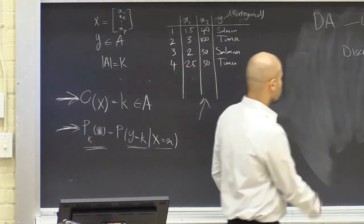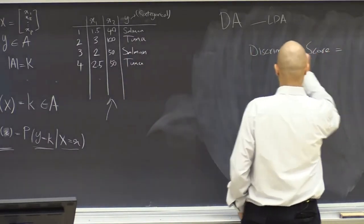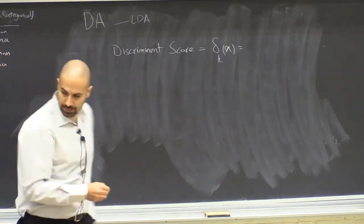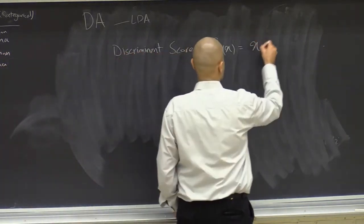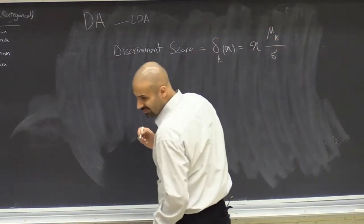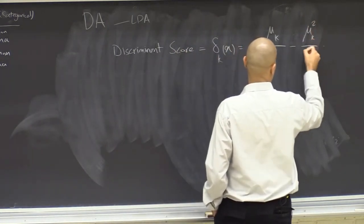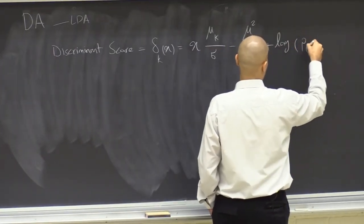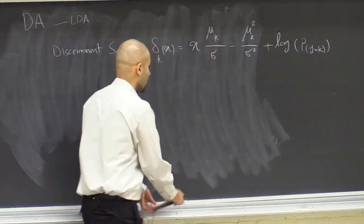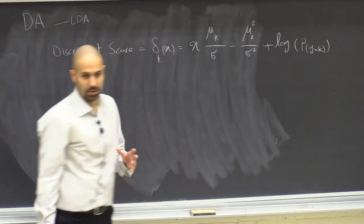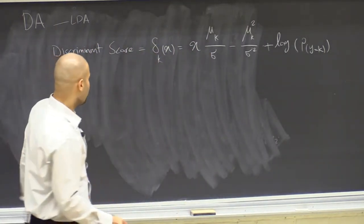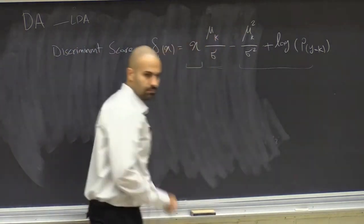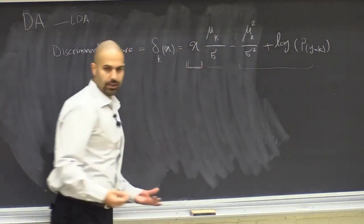The decision rule for LDA is called the discriminant score, δ_k(x). This discriminant score becomes linear in x. It equals x times μ_k over σ, minus μ_k squared over σ squared, plus the log of the prior. The prior is the probability of Y being equal to k in general. This is actually quite simple compared to other LDA equations, because it is linear in x — that's why we call it LDA.